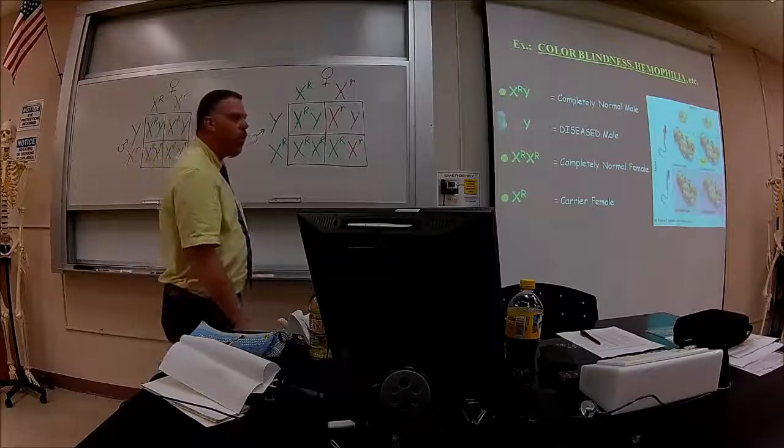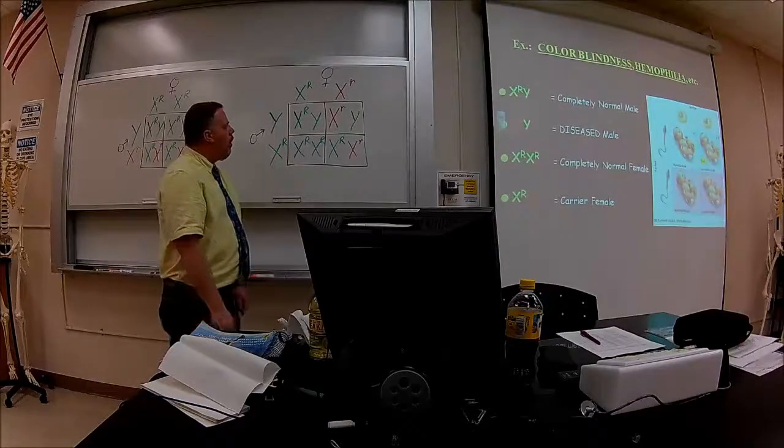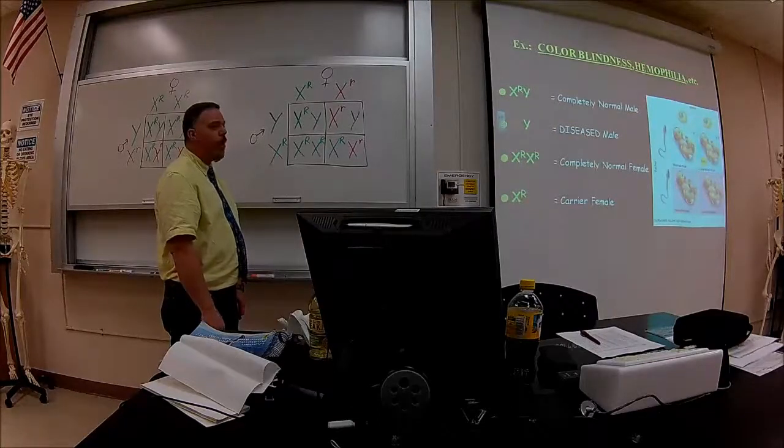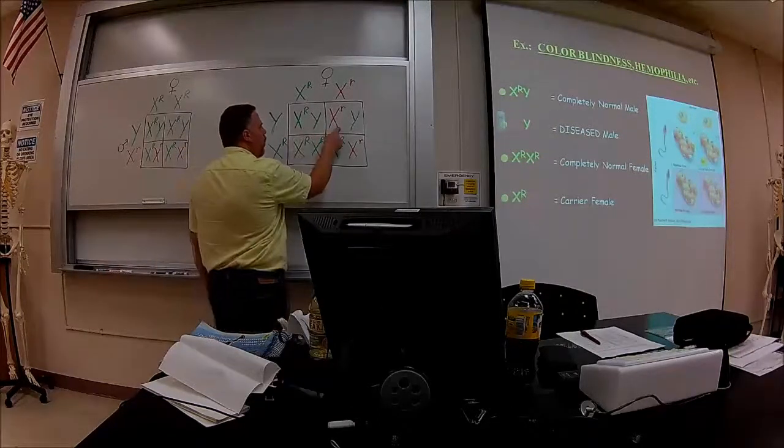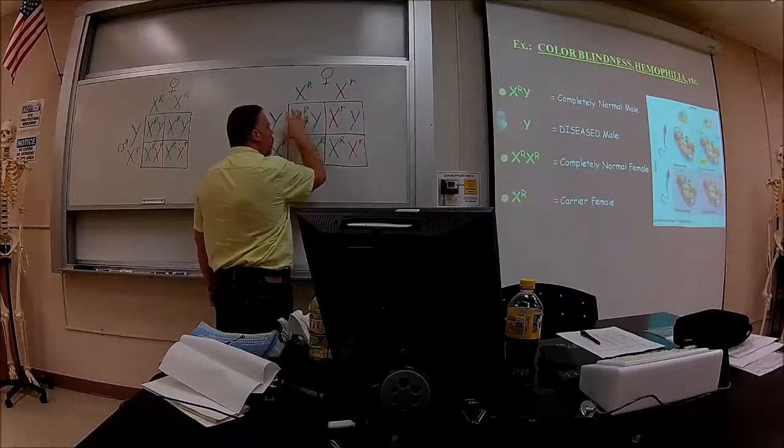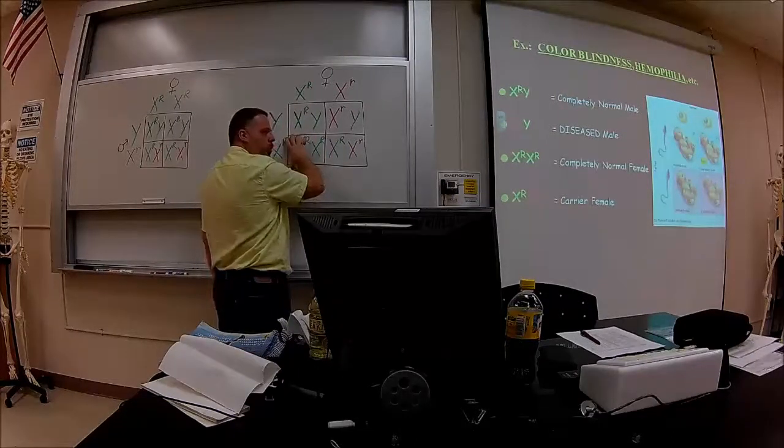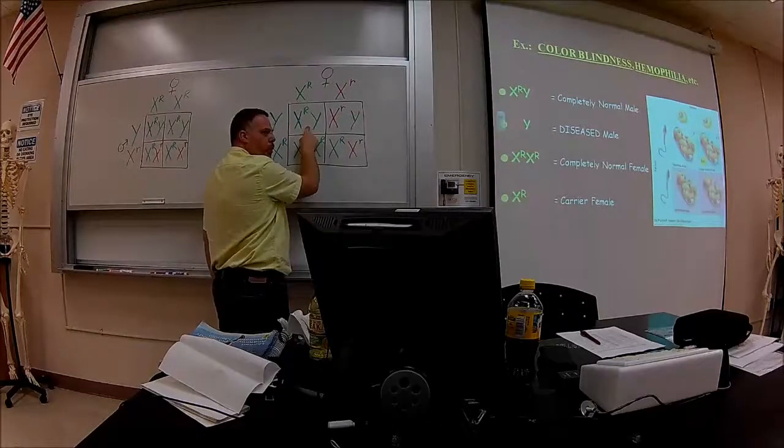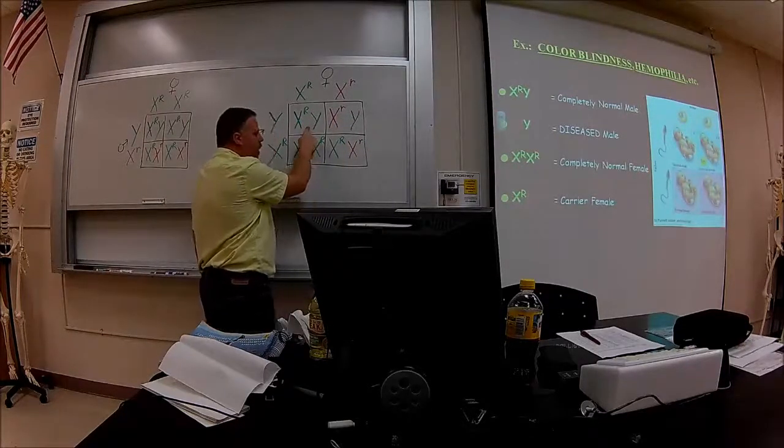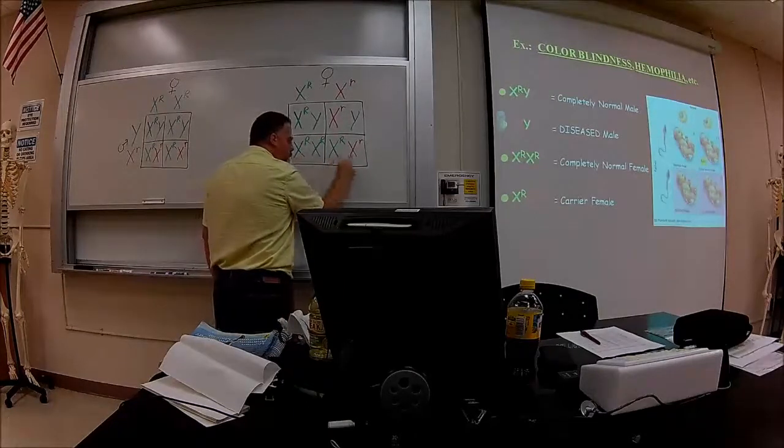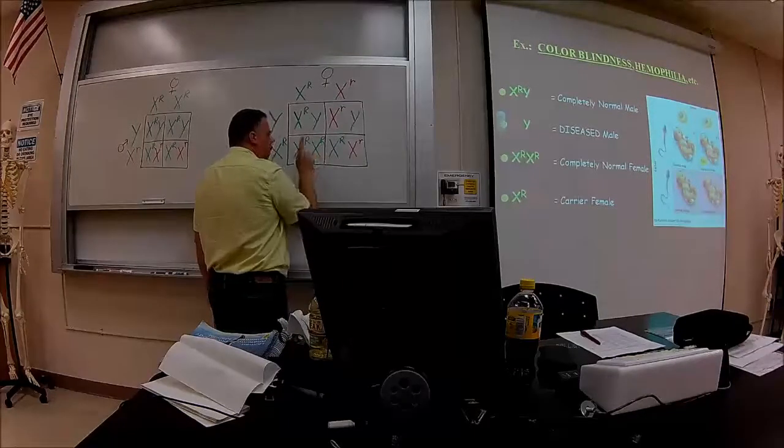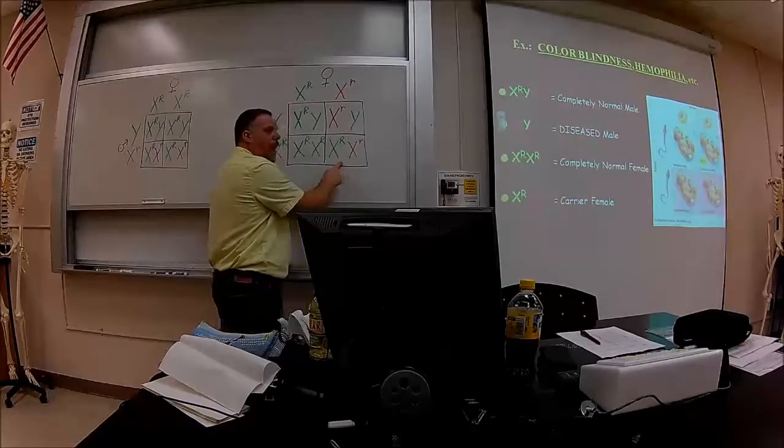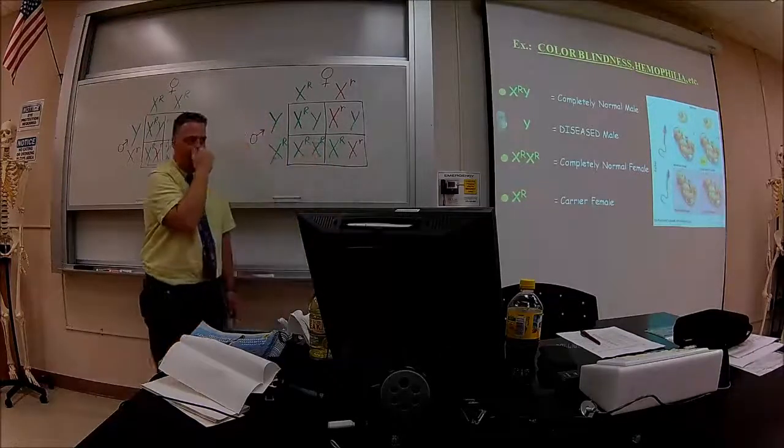But that Punnett square, what it's saying is like there's a 50% chance that if a boy, he'll have the disease, right? Correct. Yep. Here's the males. So you have, here's, so half of it will be males, half of it will be females. Of the males, 50% will have the disease and 50% will be completely normal. And here, a hundred percent of females here, these two blocks here, 50% will be completely normal. 50% will be a carrier, not a disease.